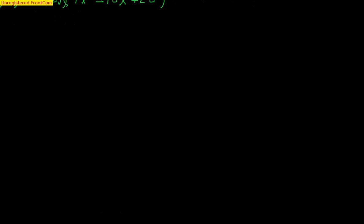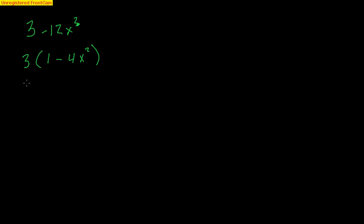The last thing we're going to talk about is when we have to remove common factors first, and then factor more. For example: 3 minus 12x². First I take out a 3, because 3 is common, leaving 3(1 minus 4x²). Then I recognize the second part is a difference of perfect squares. So this becomes 3(1 minus 2x)(1 + 2x). One squared is 1, and 2x squared is 4x².